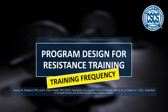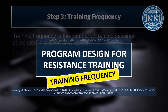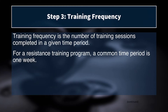This comes from chapter 17 of Essentials of Strength Training and Conditioning, written by Drs. Shepard and Triplett. Training frequency is the number of training sessions completed in a given period of time. For a resistance training program, the common time period is typically one week. Other microcycles of 10 or 14 days exist, but one week is by far the most common and practical because everything in an athlete and coach's life tends to revolve in weekly cycles.